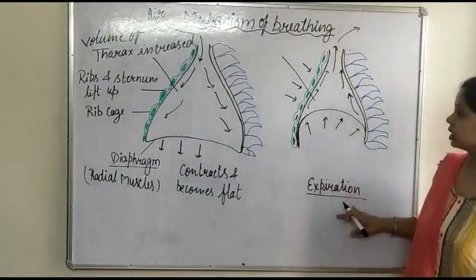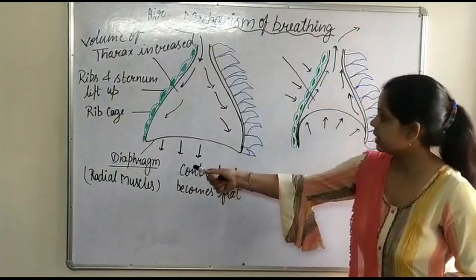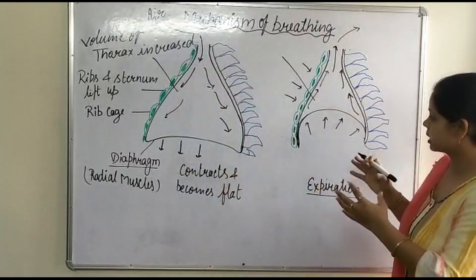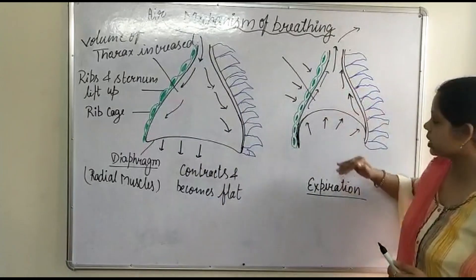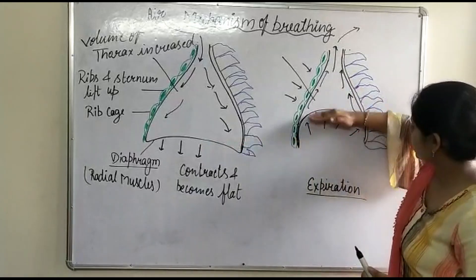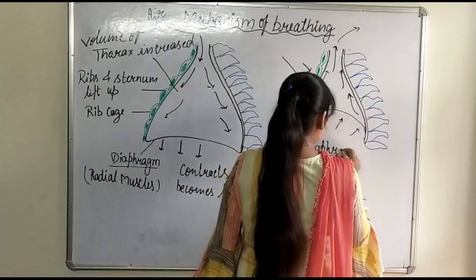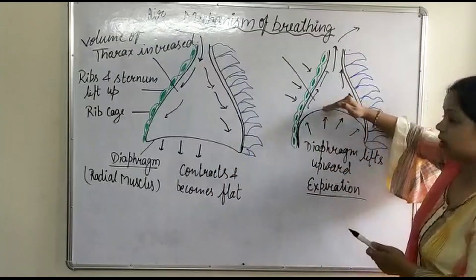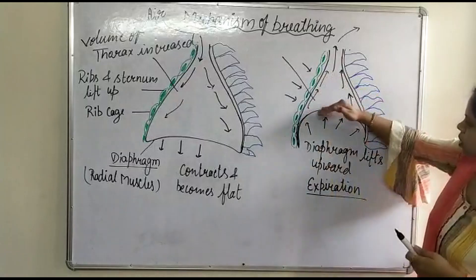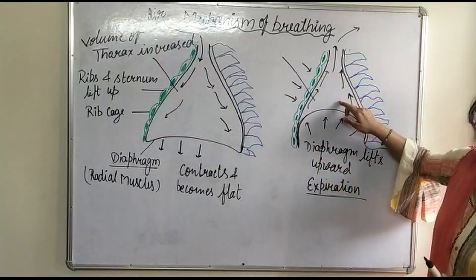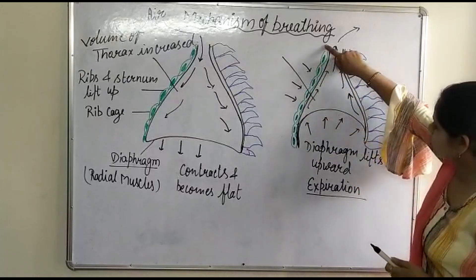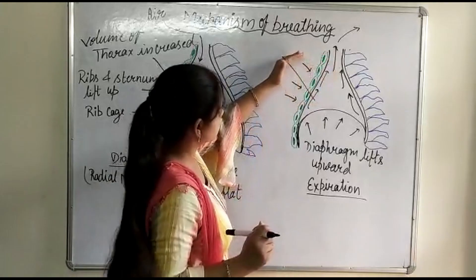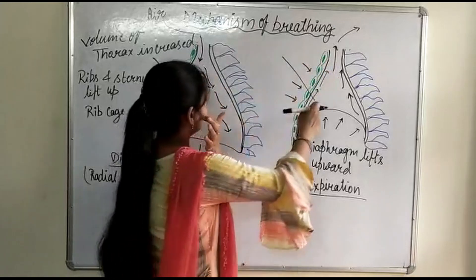During expiration, the diaphragm and the external intercostal muscles both relax. Due to relaxation, the diaphragm — which was flat during inspiration — lifts upward, returning toward its dome shape. The ribs and sternum are pushed inward. Due to which the volume of the thoracic cavity decreases.